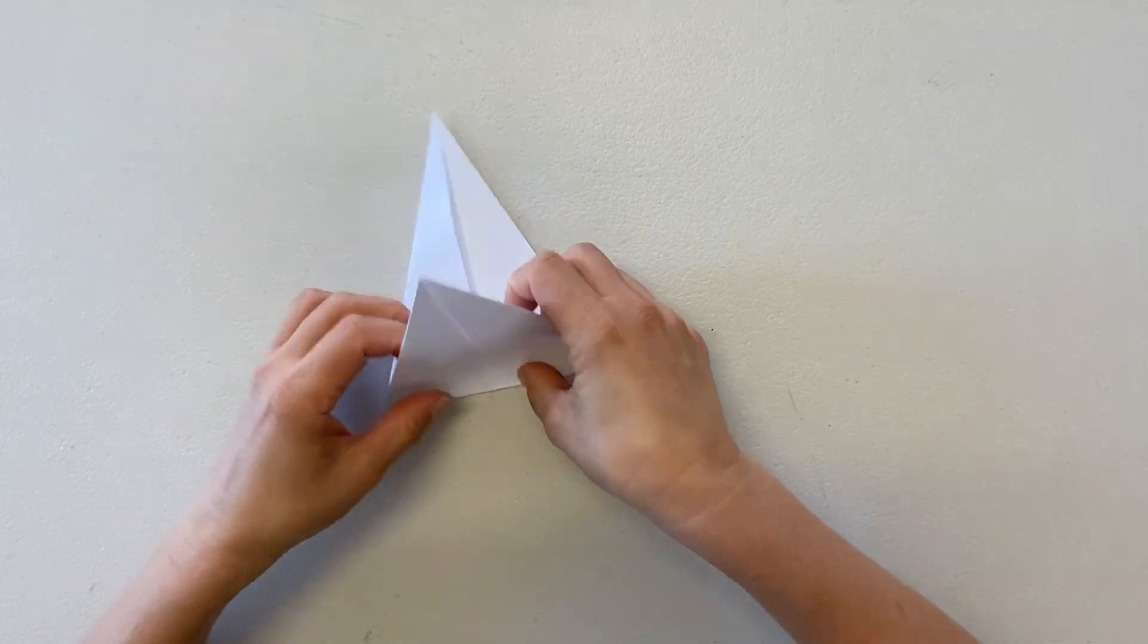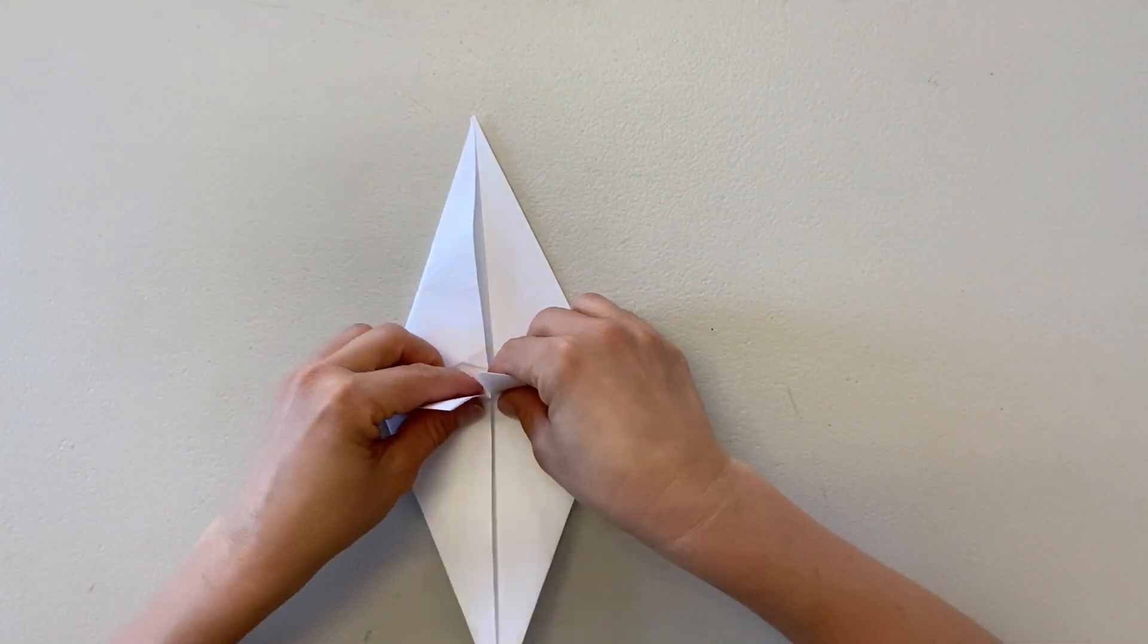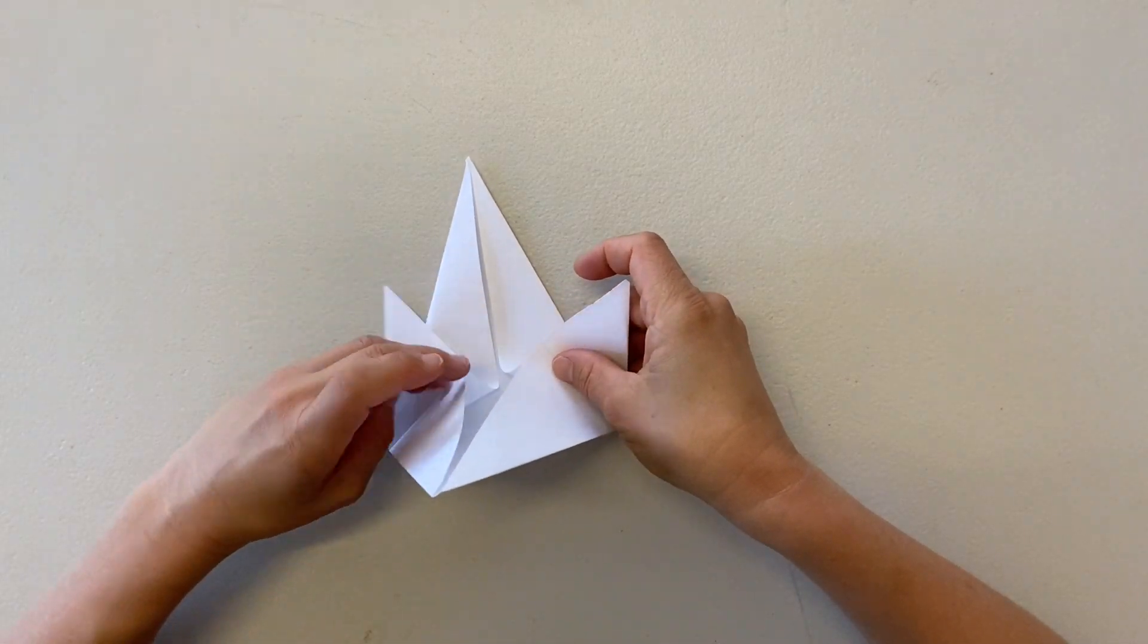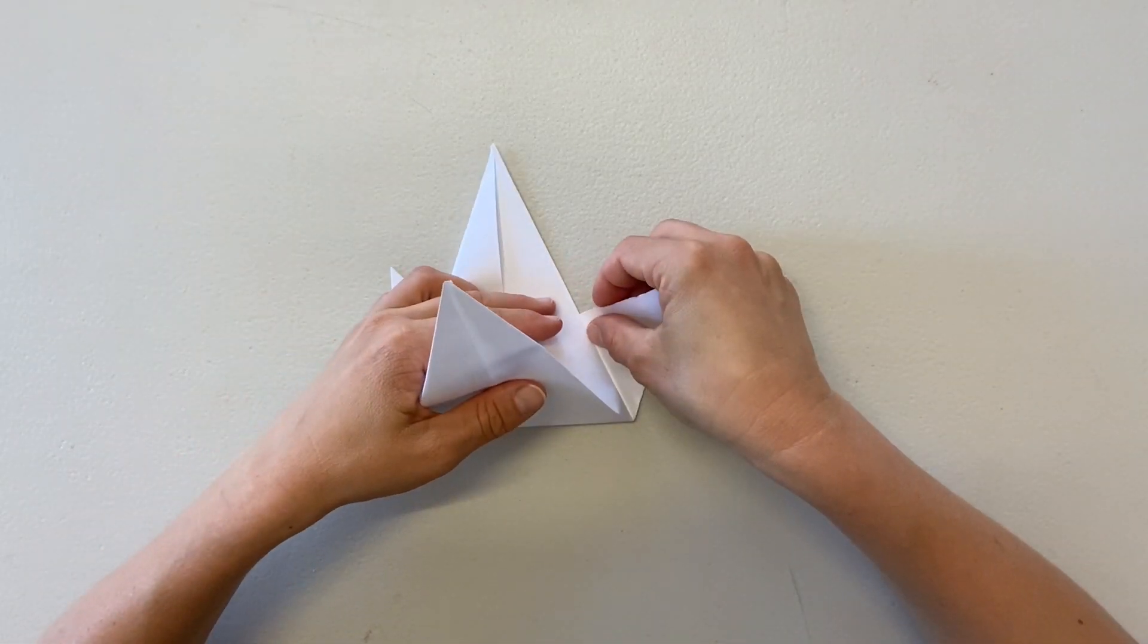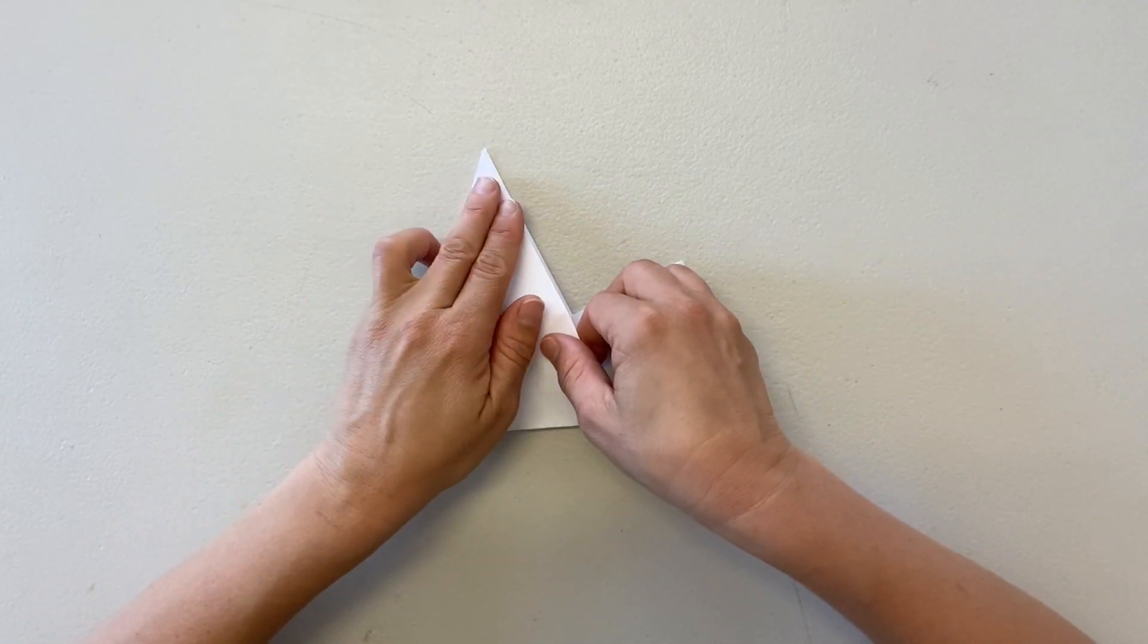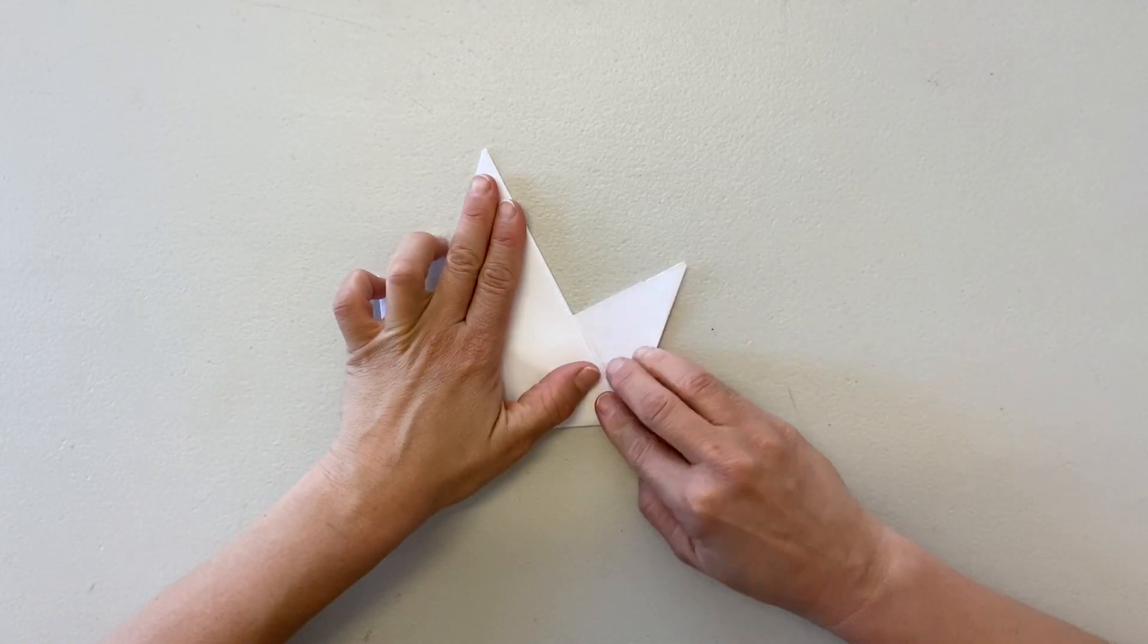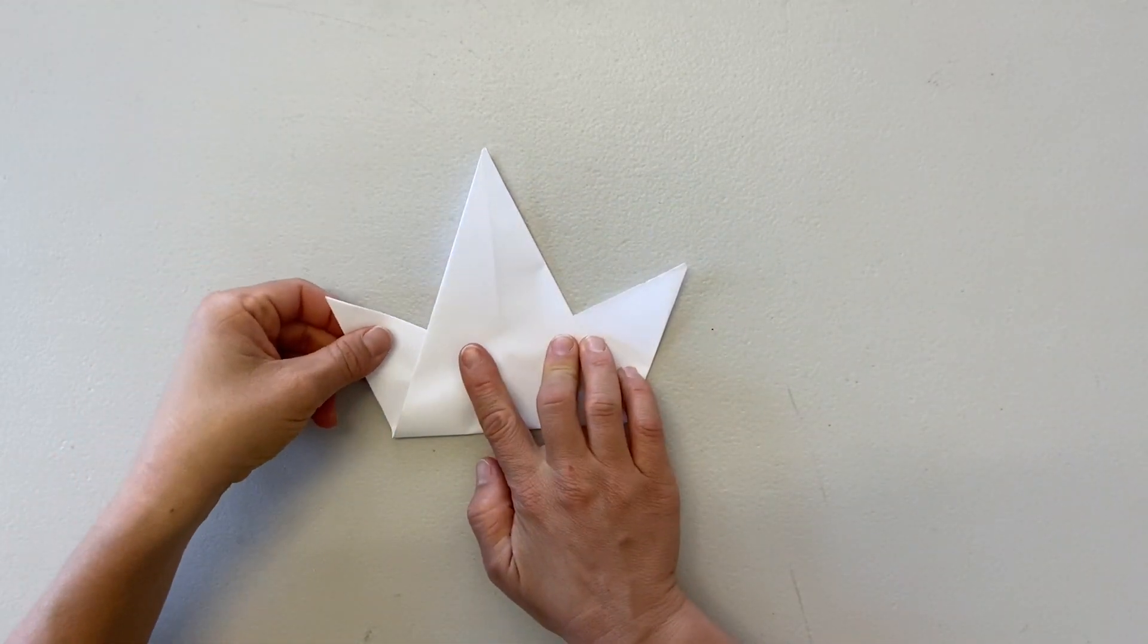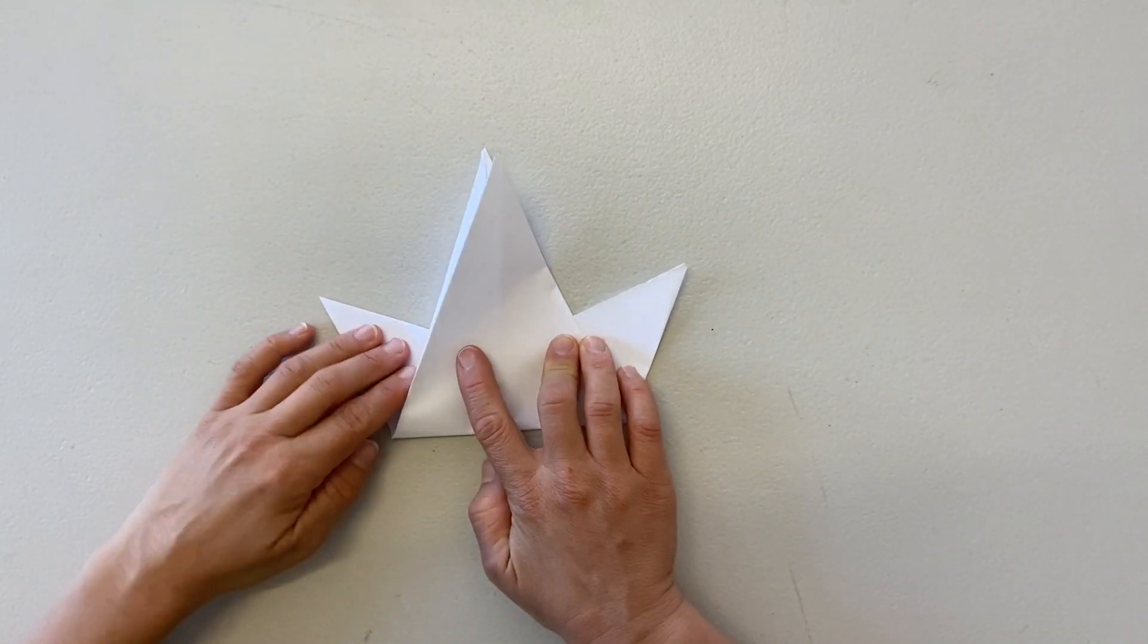I think this next part is the trickiest bit. Open up your folded paper and take hold of your little wings. Fold the edges to create a three-pointed crown shape.